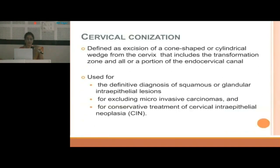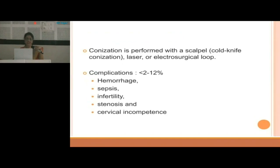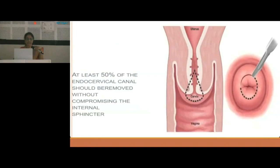Indications for cone biopsy include: squamocolumnar junction poorly visualized with high-grade lesions suspected; dysplastic epithelium extending into the endocervical canal; cytological findings showing high-grade dysplasia or CA in situ; micro-invasive carcinoma found on direct biopsy; endocervical curettage showing high-grade CIN; and cytological findings showing adenocarcinoma in situ. Cervical conization is defined as excision of a cone-shaped or cylindrical wedge from the cervix including the transformation zone and all or a portion of the endocervical canal.